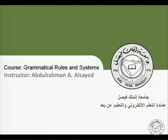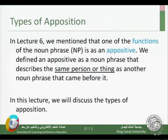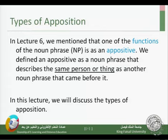Bismillah ar-Rahman ar-Rahim. Welcome to lecture 7 of our series about grammatical rules and systems. If you remember in the previous lecture, lecture 6, we talked about opposition, so we will go back to this in this lecture and talk a bit more about it. We mentioned the types of opposition. Opposition is a function — one of the functions of the noun phrase, abbreviated as NP.